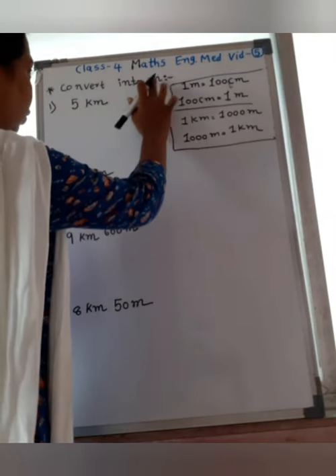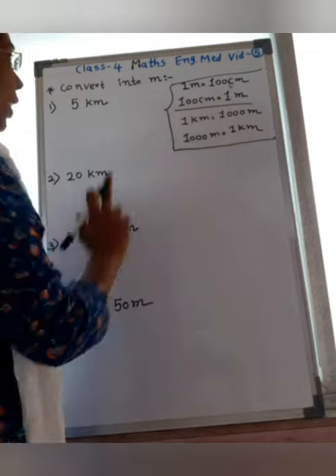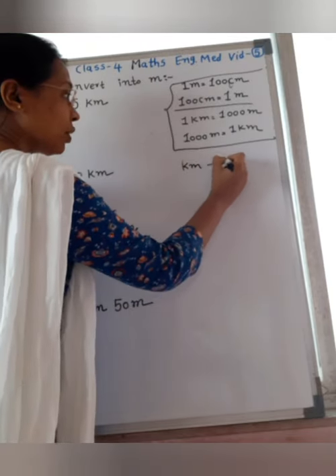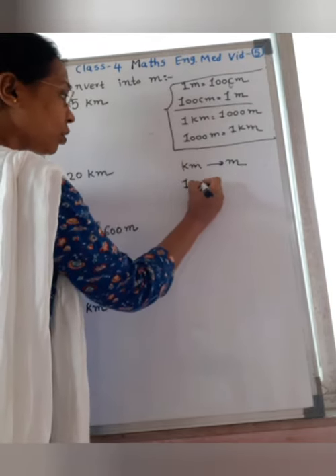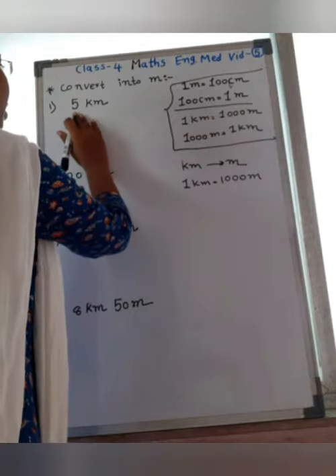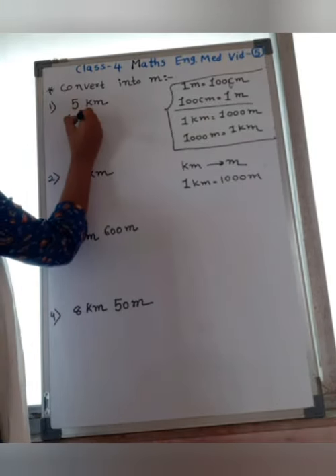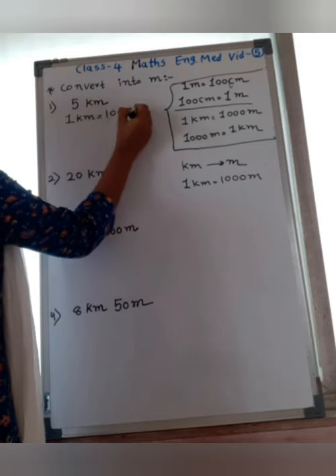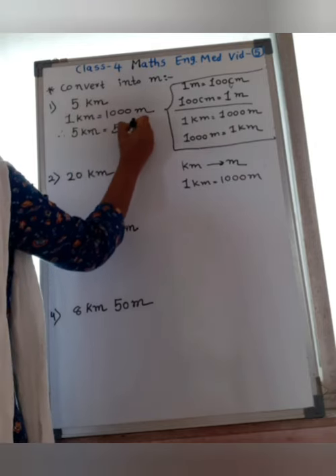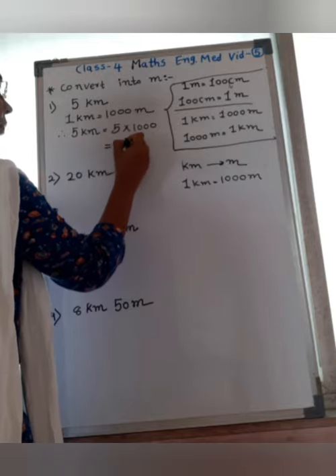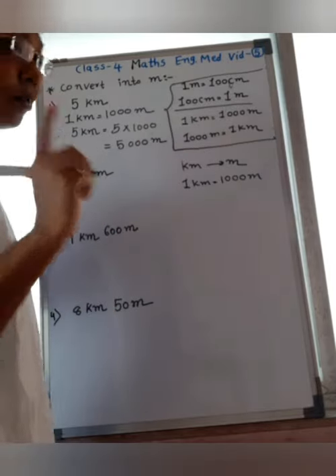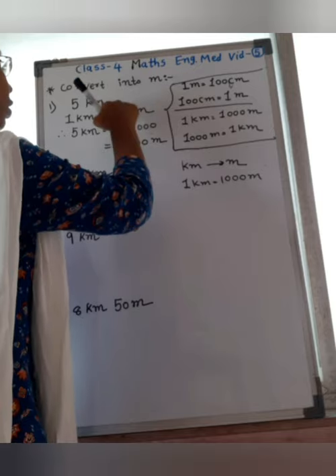Now convert into meter — kilometer is given. To convert kilometer into meter, use the formula: 1 kilometer equals 1,000 meter. First question: 5 kilometer. So, 5 kilometer equals 5 multiplied by 1,000 — the answer is 5,000 meter. We write meter because we are converting kilometer into meter.